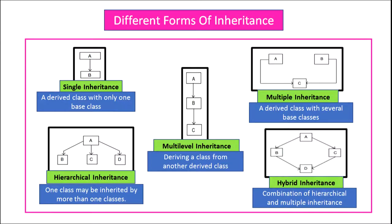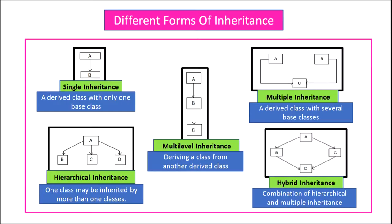Multi-level inheritance involves deriving a class from another derived class, which is itself already derived from another base class. In this example, class A is the base class for class B — that is, class B is derived from A — and class B acts as a base class for another class C. So class C is the child class and B is the base class for class C.